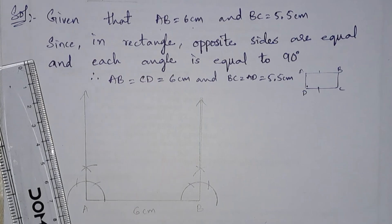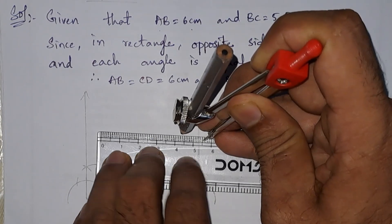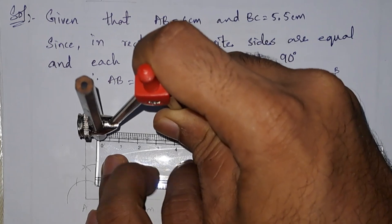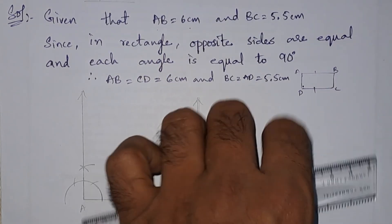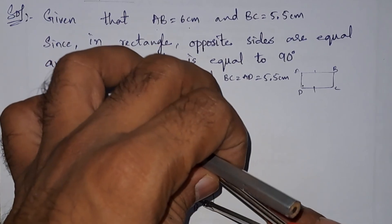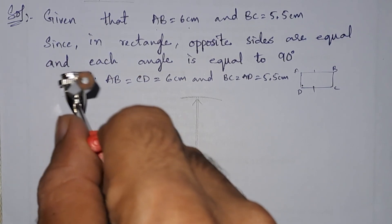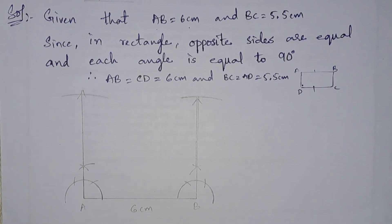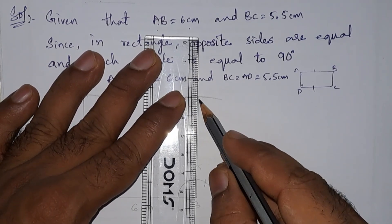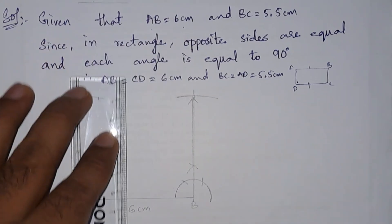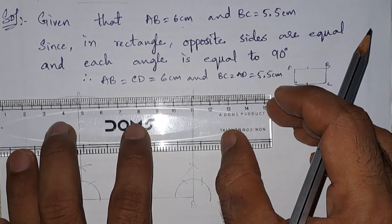Now we need to take 5.5 centimeters for BC, so let us set 5.5 centimeters of radius. From center B, let us draw an arc, and from A draw another arc. We need to extend the ray from B slightly, then extend it somewhat.